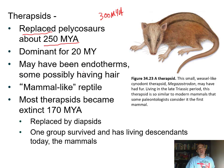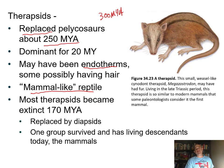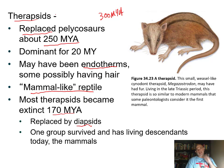Today's reptiles are ectotherms—they obtain their heat from external sources, not cold-blooded as commonly mislabeled. The therapsids were replaced by the diapsids, which had two holes in the skull, around 170 million years ago. One group descended from therapsids survived all that extinction, and it is that group that gave rise to mammals. So mammals evolved from therapsids, which were synapsids with one extra hole in their skull.